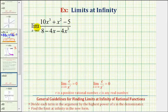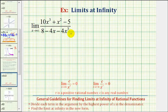We want to determine the limit as x approaches infinity of the given rational function. There are several ways to determine limits at infinity. One method is a shortcut method based upon the degree of the numerator and denominator. So let's look at that first, and then we'll look at some general guidelines for determining limits at infinity of rational functions.